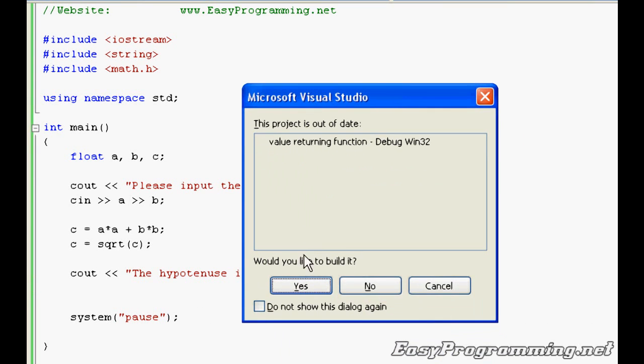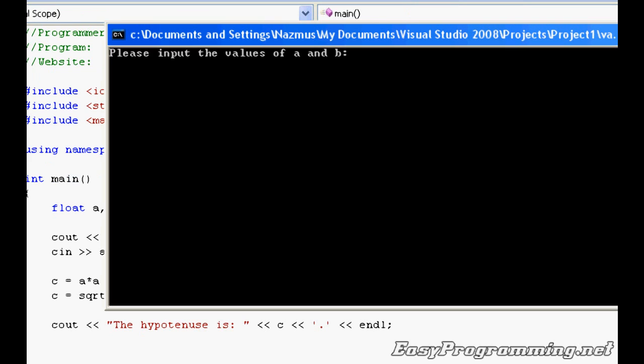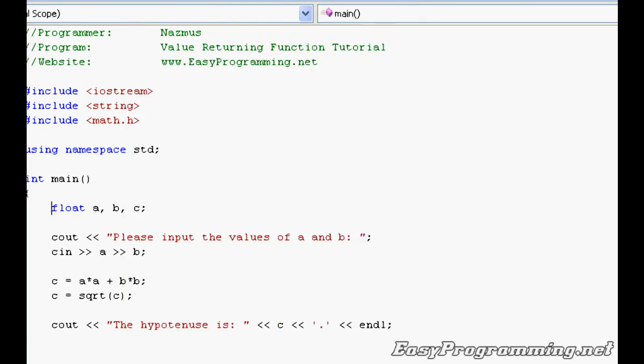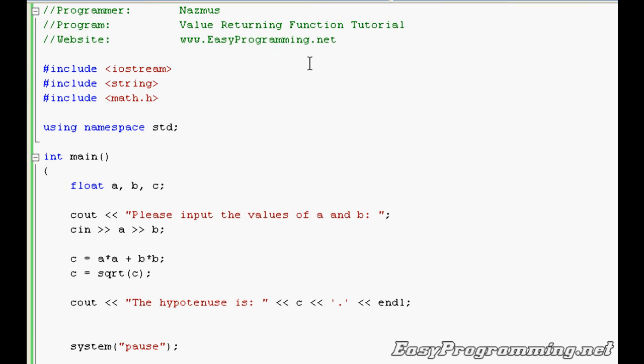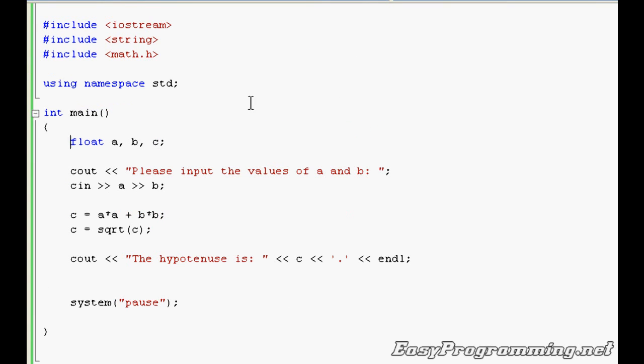Just to show you what the program looks like without the function, I'm going to run it into 3 and 4, the value should be 5, and there it is. I'm going to run it one more time, 1 and 3, and 3.16228. Those will be my control variables or consolidating data when I'm testing it later on.